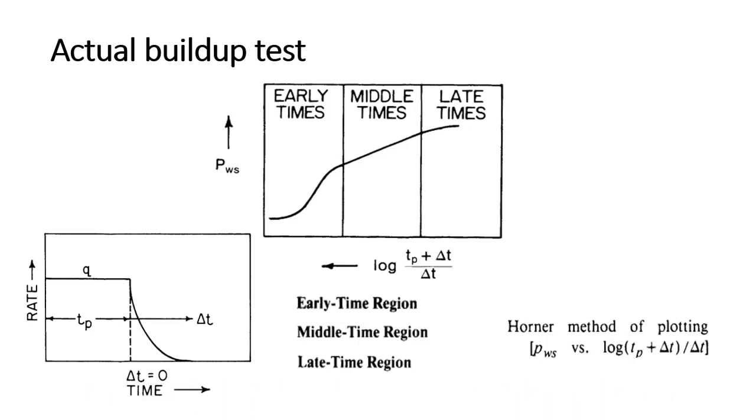The early time region is mostly the wellbore effects or the skin effect around the wellbore, and because of that, this early time region distortion is there in the Horner's plot data. The middle time region is the actual transient data from the reservoir where fluid flow is happening, and the record of data is the representation of that fluid flow inside the porous media in the main reservoir.